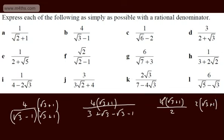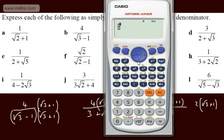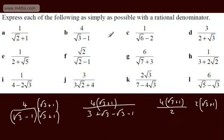The take-home point is: when rationalising, if you've only got a surd in the bottom (or a number multiplied by a surd), simply multiply top and bottom by that surd. If you have a plus or minus in the bottom, multiply by the conjugate. There are only two cases you'll come across: a plus or minus in the bottom, or simply a surd.